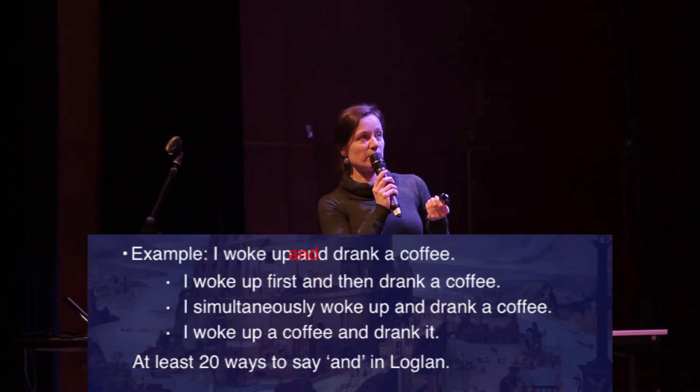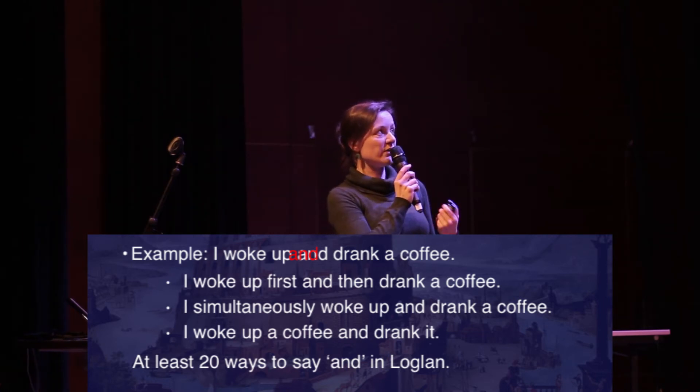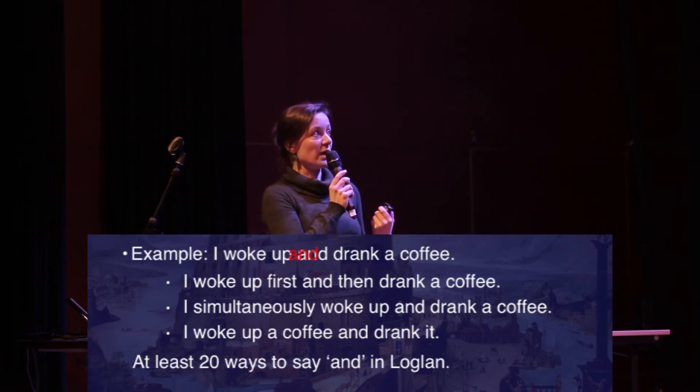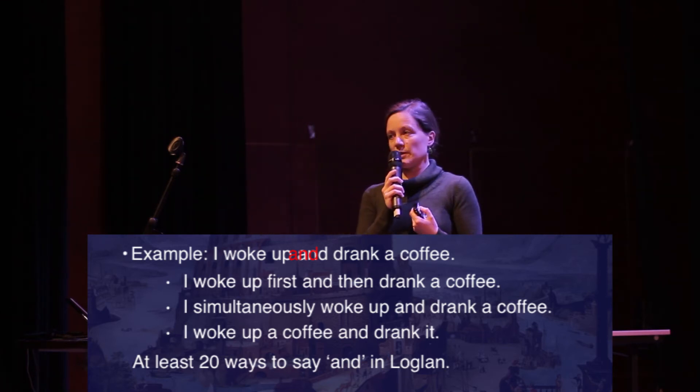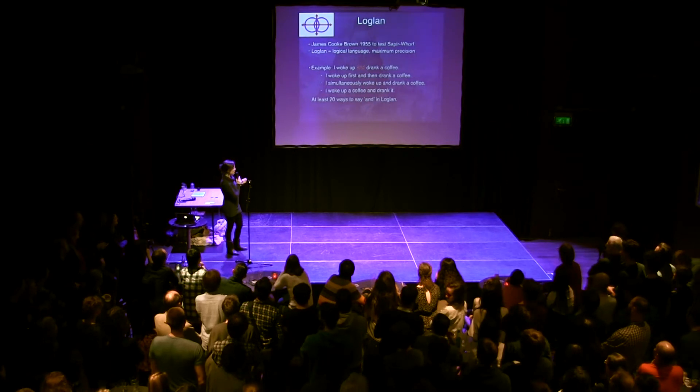So first task: construct a logical language. The idea was we need maximum precision. In Wilkins' language, we have the problem: what's the concept of the universe? In this language, you have the problem: what is the relationship between the concepts? Because this is where the logic is. For example, look at this harmless English sentence: 'I woke up and drank a coffee.' What do you actually mean? The word 'and' connects concepts, parts of sentences. Did you mean: I woke up first and then drank a coffee? Or simultaneously woke up and drank a coffee? Or — your coffee was asleep and you meant: I woke up a coffee and drank it? This problem of what you actually meant would not have happened in Loglan, because you have at least 20 ways to say 'and' there, and it's very precise.